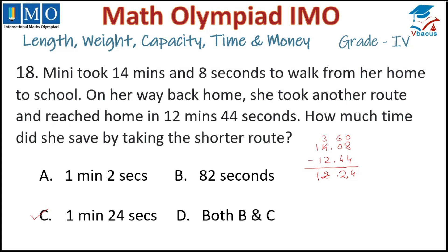To explain further: 14.08 minus 12.44 — we cannot subtract 44 from 08, so we borrow 1 from the minutes column, making it 3. Since 1 minute equals 60 seconds, we add 60 to get 68 seconds. 68 minus 44 is 24, and 3 minus 2 is 1. So the answer is 1 minute 24 seconds, option C. Tick option C.